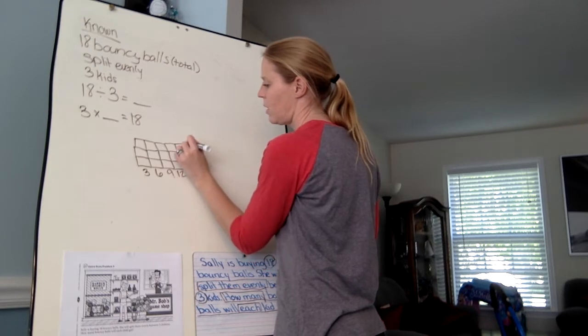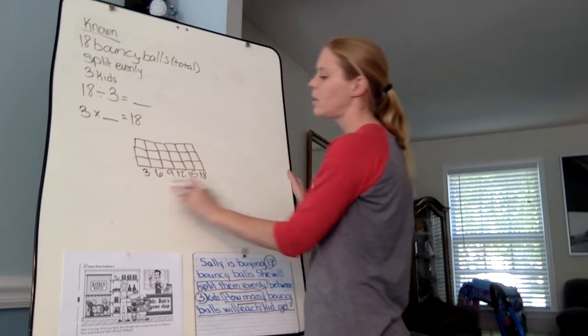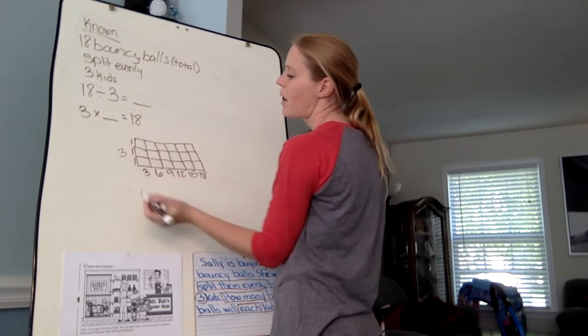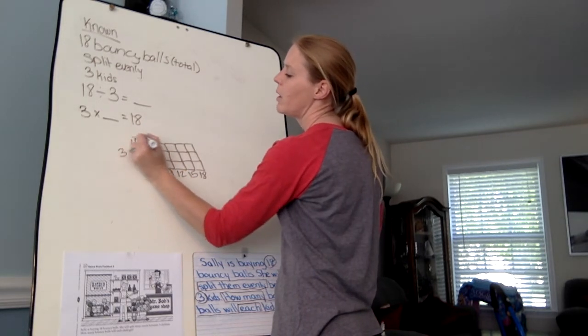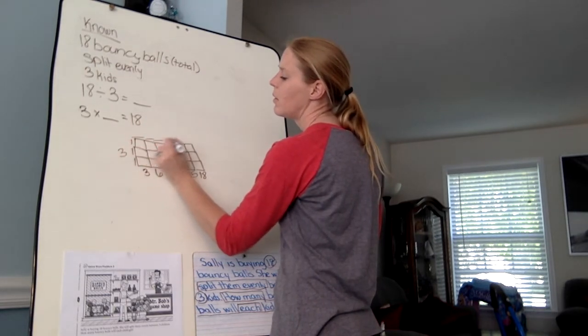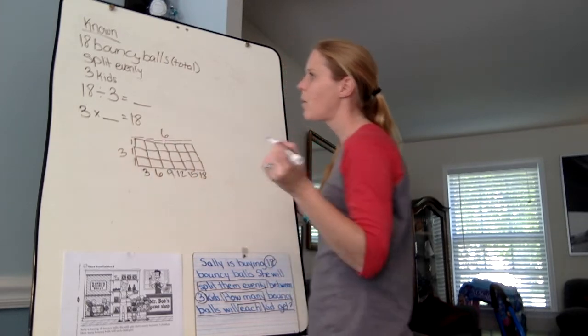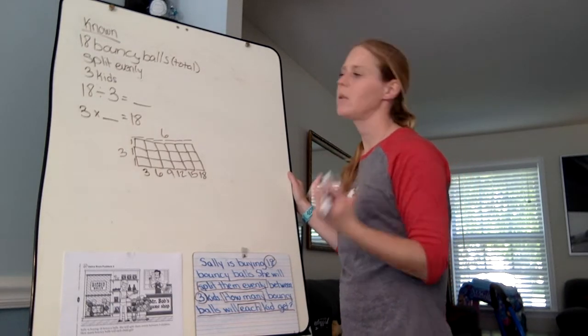And I'm going to keep going and making sure everybody gets an equal share until I get to 18. I'm almost there. So this is all the information I know. So now I find my unknown information, and that's right up top. So I go 1, 2, 3, 4, 5, 6. So how many bouncy balls does each kid get? Each kid gets six bouncy balls.